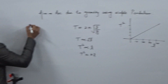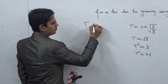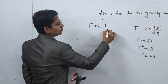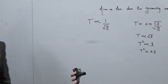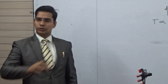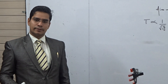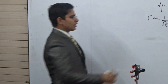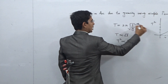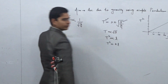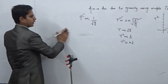T is inversely proportional to the square root of g. When we do this experiment on the surface of the earth, the value of g is constant at every place. So by knowing the value of T and the value of L, we can find out the value of g using this formula.